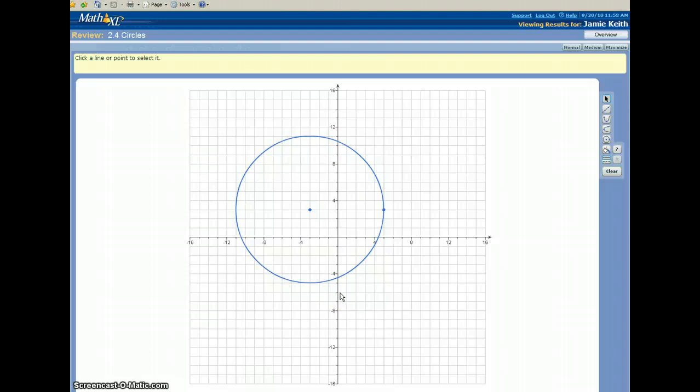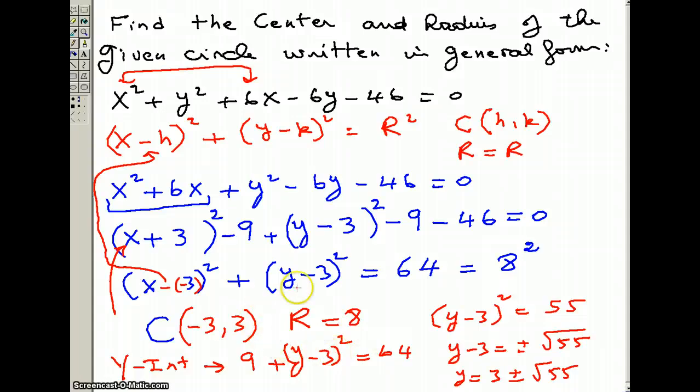Now we can do the same thing for the x-intercept and find these two points. If we go back here, all we need to do here is put y equals 0 this time. By putting y equals 0, I'm going to get (x plus 3) squared plus 9 equals 64. And then move the 9, you get 55. (x plus 3) squared equals 55. Do the square root and find the x.